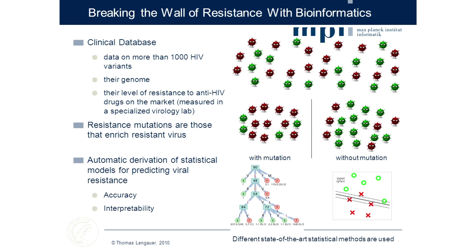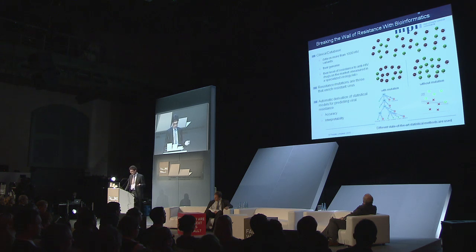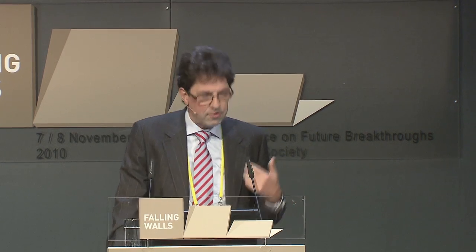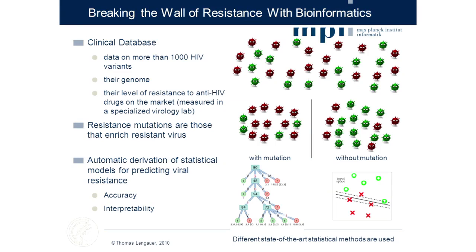The models are optimized in two respects. The first quality assessment is accuracy: we want the model's predictions of resistance level — computed from the viral genotype — to be as accurate as possible. The second quality assessment is very important in the medical domain: interpretability. Once the model outputs its answer and says it thinks the virus is resistant against a given drug, that should not be the end of it. The doctor wants to hear why — some plausibility, some argument of how the computer arrived at its decision. That's what I mean by interpretability.